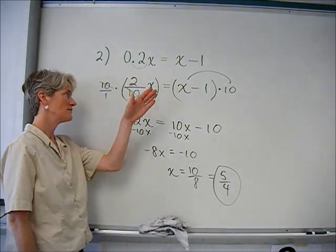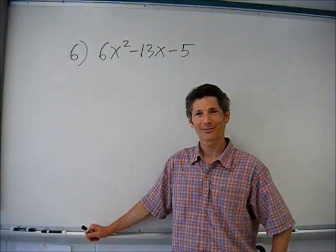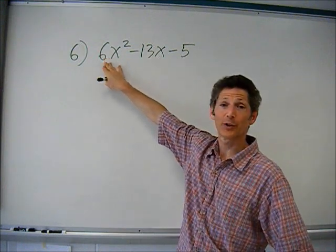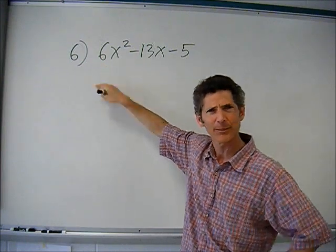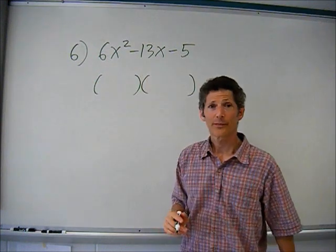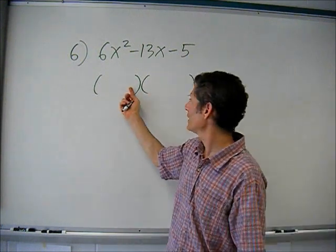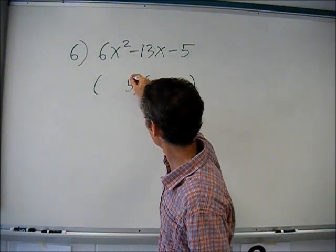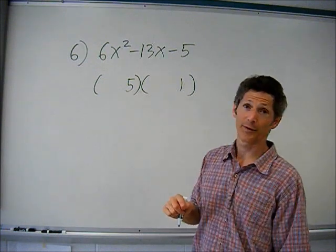Same ideas as for the fraction — just get rid of that decimal to make it an easier problem. Here's a quadratic to factor. It's a little bit tricky because the first coefficient is not one — it's 6x squared — so this can be trickier. The last term is five, and something times something must be five, so that's going to be five and one. Those are my only choices.